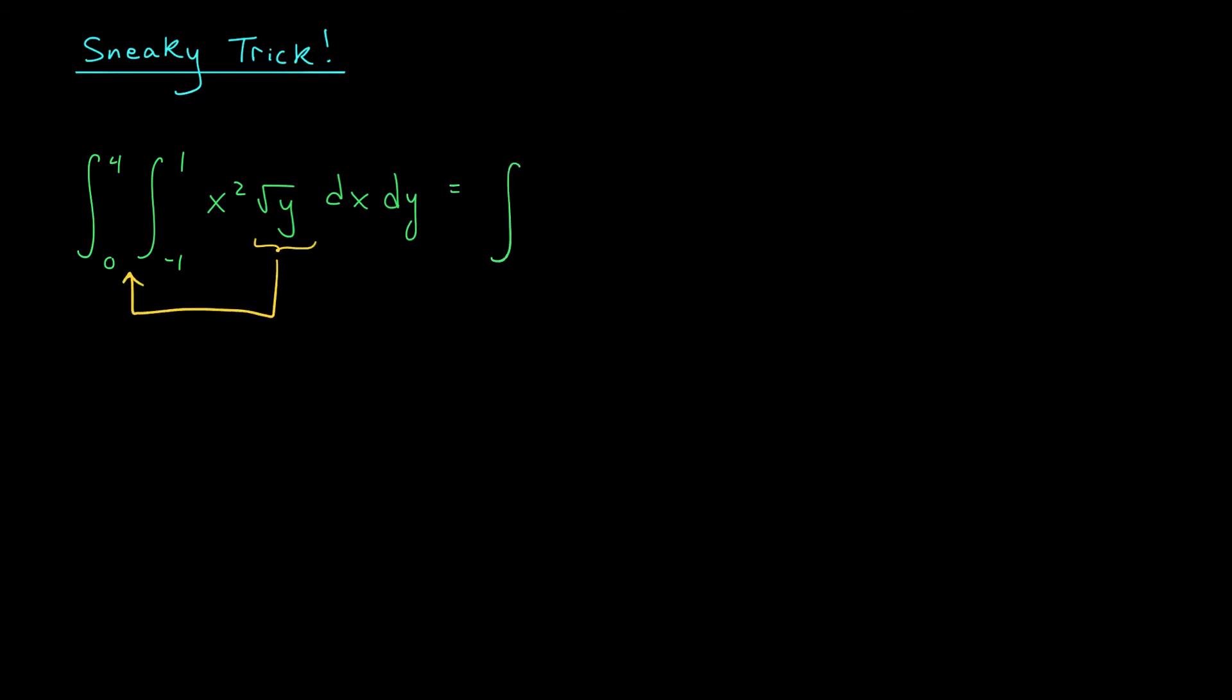We can write this as the integral from 0 to 4 of root y times the integral from minus 1 to 1, x squared dx dy. Hmm, interesting. But there's actually something more that we can pull out here. Notice that this integral, the integral from minus 1 to 1 of x squared dx, is just a real number, right? When we evaluate this integral, we're going to get a real number, and therefore, we could pull it out of this integral with respect to y.